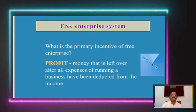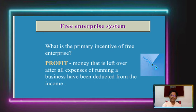In this perspective, the free enterprise system — slightly described in the previous module — is related to the primary incentive of profit: the money left over after all expenses of running a business have been deducted from income. The enhancement of resource value through conversion and creation of goods and services means the end user enjoys that enhanced value.